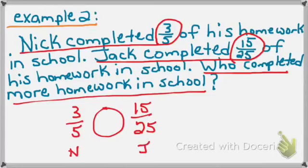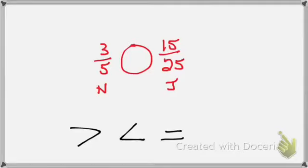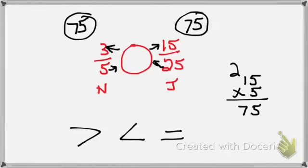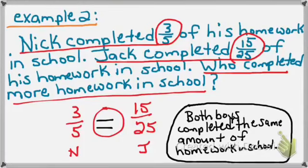To compare fractions, my answer is either going to be greater than, less than, or equal to. I am going to use cross-multiplication, bottom to top. So I'm going to do 25 times 3, which is 75. Put it in a circle. Then 15 times 5 — I'll use a little scrap paper. 5 times 5 is 25, carry the 2; 5 times 1 is 5, plus 2 is 7. So 75 goes in the circle. Now I have to compare the two numbers in the circles: 75 and 75. Is 75 greater than, less than, or equal to 75? It is equal to 75. So therefore, three-fifths is equal to 15-25ths. Nick's three-fifths was equal to Jack's 15-25ths, so both boys completed the same amount of homework in school. That's my final answer.